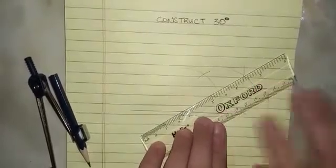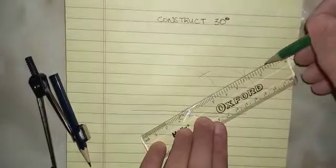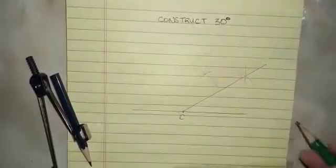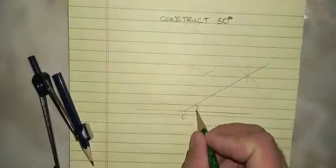Now, we just line our ruler up with the intersection of the arc and the point, and we will draw a line. Now, we have constructed 30 degrees.